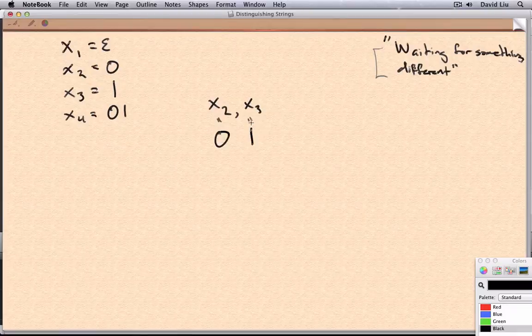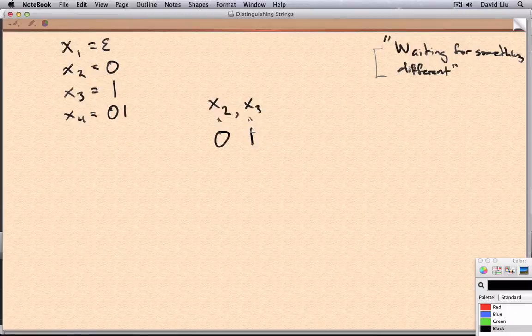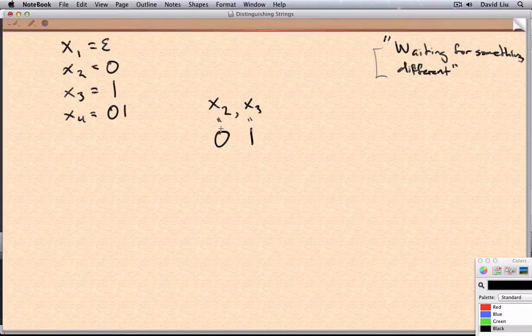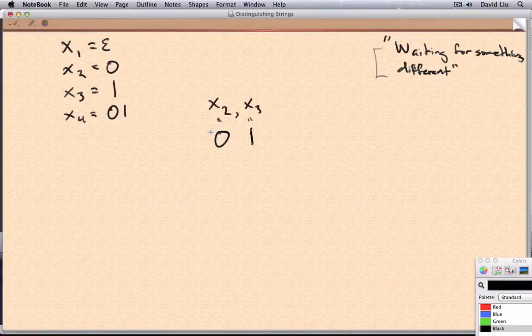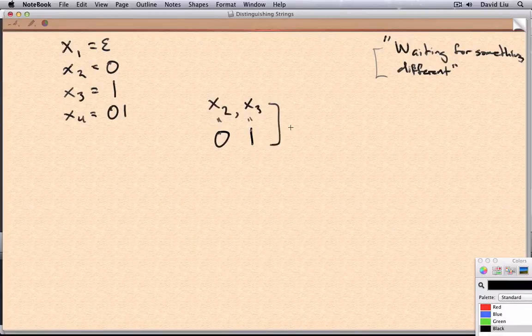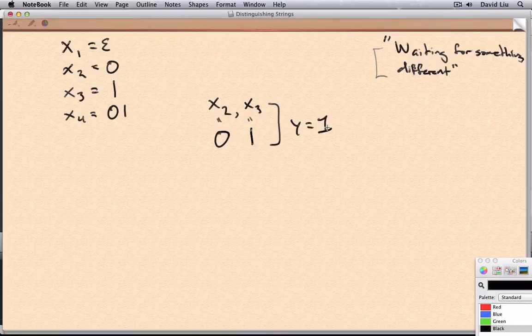So in fact, we know that this is definitely not in the language. So all we need to do is pick something that this is waiting for to see that, yes, it is in the language. That is, we can choose Y to equal 1 here.